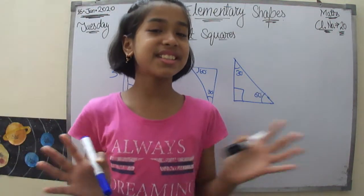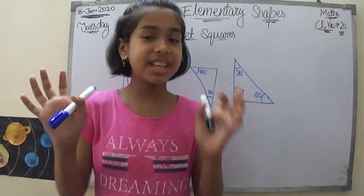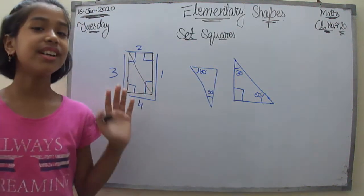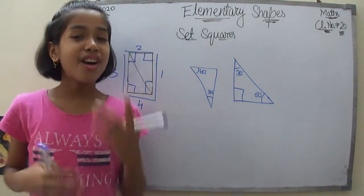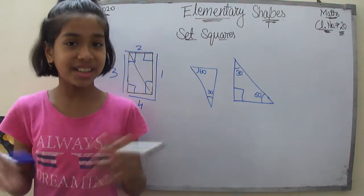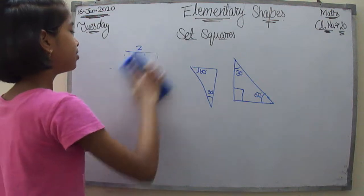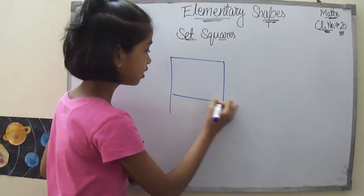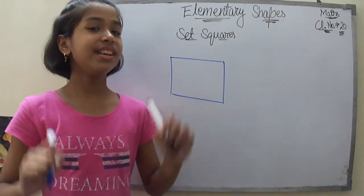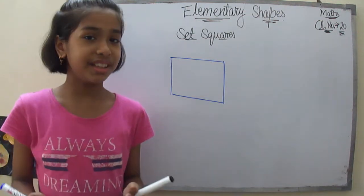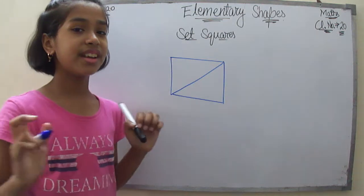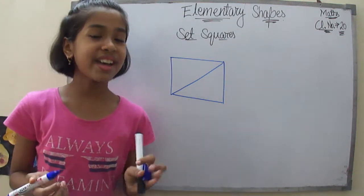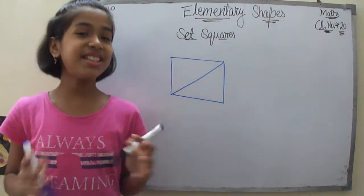If I bring two triangles of the same size and place them together like this, I will get a quadrilateral. Or, to imagine this better, if we have a square and cut it diagonally — what is the diagonal? Like this. If we cut this out, what do we get? Two triangles.